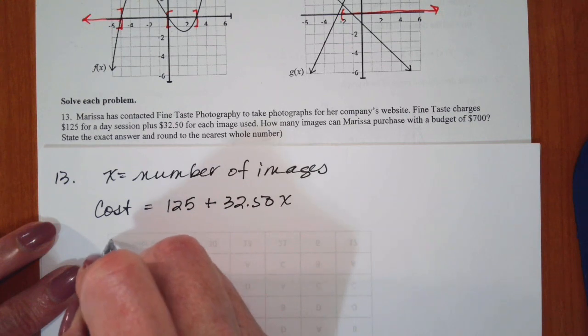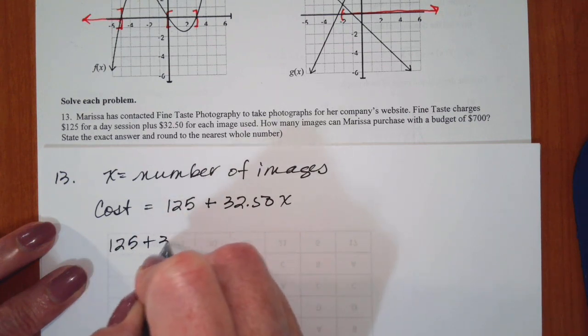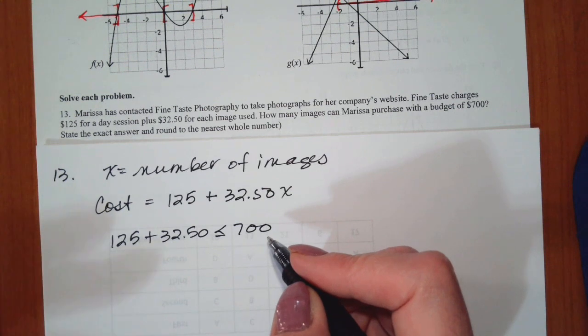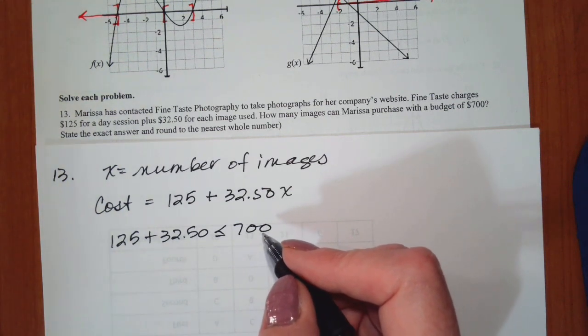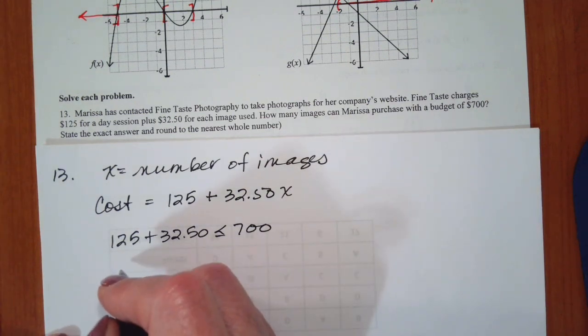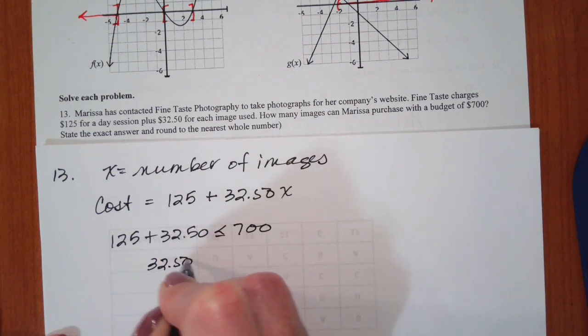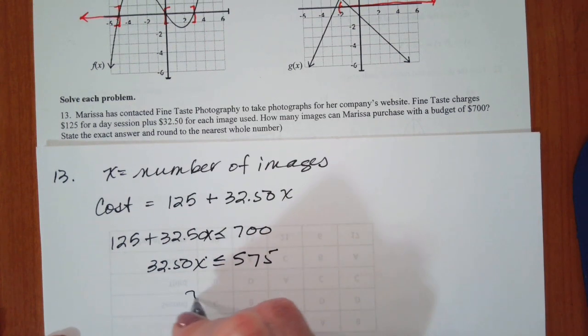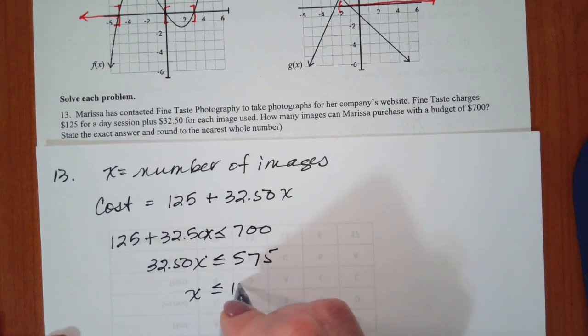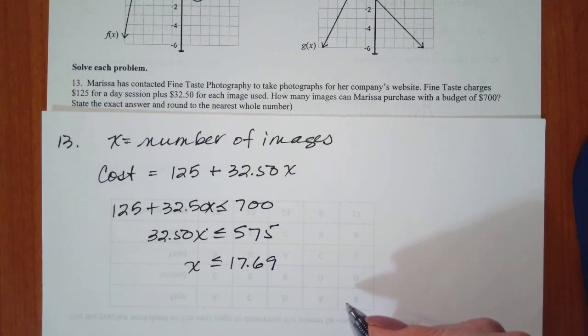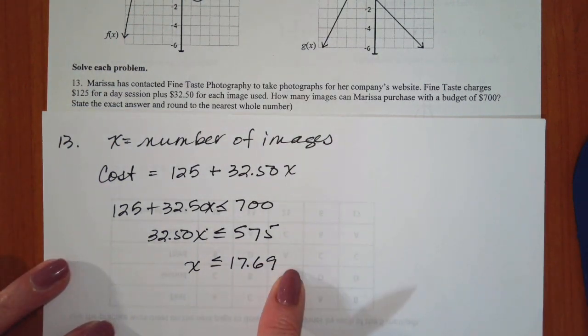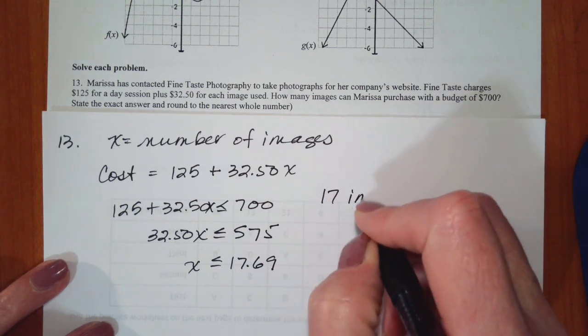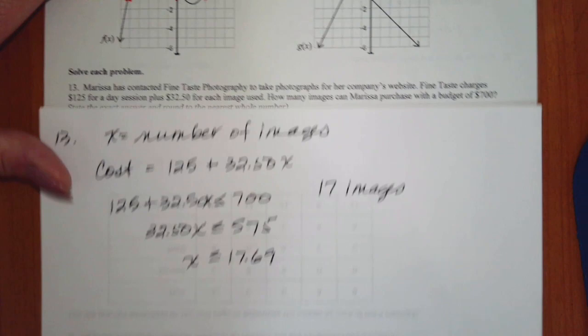We want to know where is that 125 plus $32.50x less than or equal to 700. So I'm going to subtract 125, so I get 32.50x is less than or equal to 575. And when I divide, I get x is less than or equal to 17.69. Well, they're not going to let you buy a piece of an image. If you round up to 18, which is the nearest, that's going to take you over the $700. So we're going to have to say 17 images. She'll have a few dollars left over.